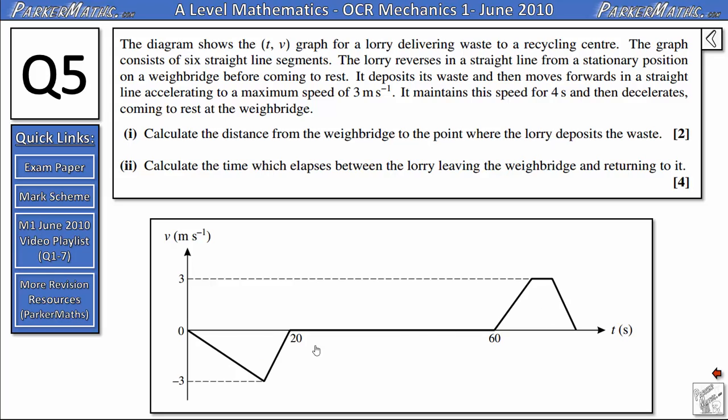The only difference will be is that the signs will be opposite. So we know this bit here is actually a displacement of negative 30. That means this part here must have a displacement of positive 30.